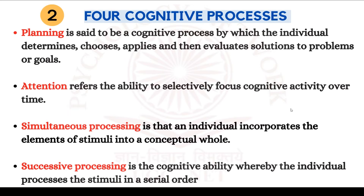Simultaneous processing is when the individual incorporates elements or stimuli into a conceptual whole. For example, suppose your eyes are closed and you are taken to a room, then your eyes are opened. You see a blackboard, many chairs and tables. You put two and two together and understand this is a classroom — you see it as a conceptual whole. You are not seeing the duster alone or the chairs alone; you are seeing them together as a concept: classroom.